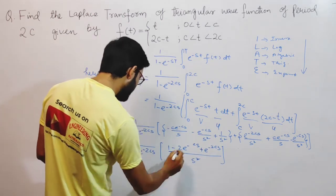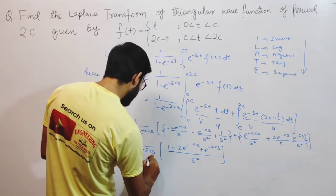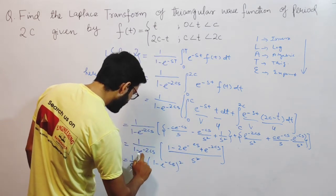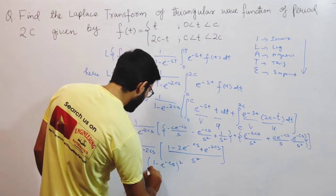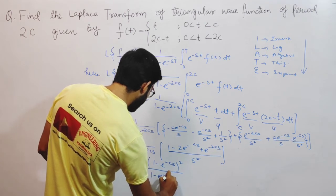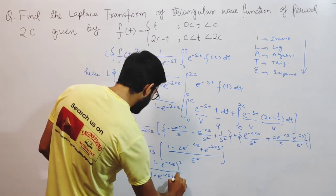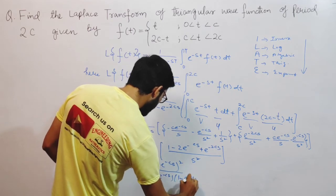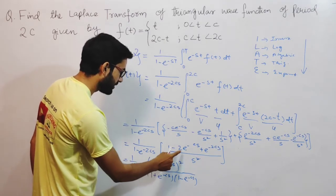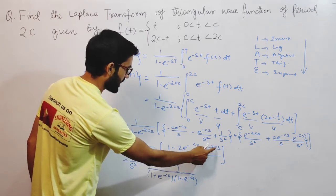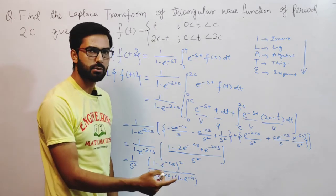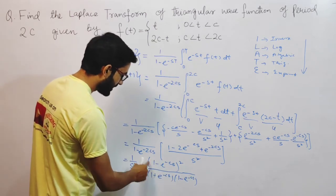I recognize that 1 minus 2e^(-cs) plus e^(-2cs) is a perfect square of the form (a minus b)² = a² minus 2ab plus b². So it equals (1 minus e^(-cs))². Then I factor the denominator (1 minus e^(-2cs)) using the identity a² minus b² = (a plus b)(a minus b), giving (1 minus e^(-cs))(1 plus e^(-cs)).